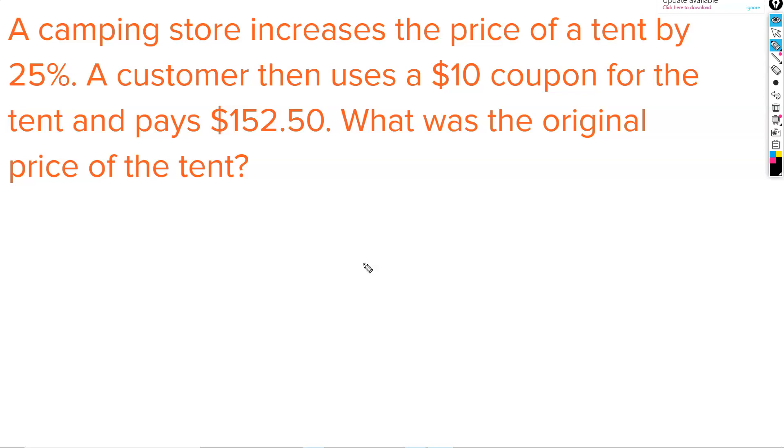A camping store increases the price of a tent by 25%. A customer then uses a $10 coupon for the tent and pays $152.50. What was the original price of the tent? If we're increasing the price by 25%, that means we're paying 125%. We can write that as 1.25.